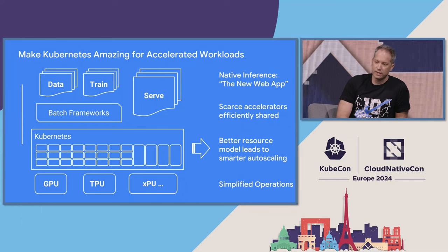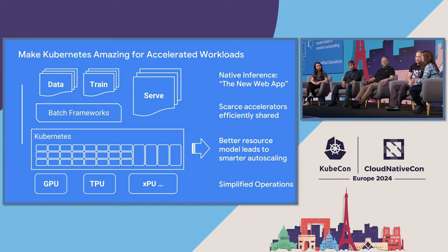We need to support batch frameworks effectively. And since training is really just the development part of the process, everybody's got to go to production at some point. Kubernetes needs to be the best place to run production inference workloads. The focus will have to be on constructs that make it easy to run those and keep them running on top of accelerators pretty much 24/7.